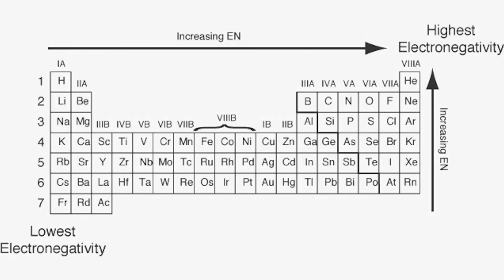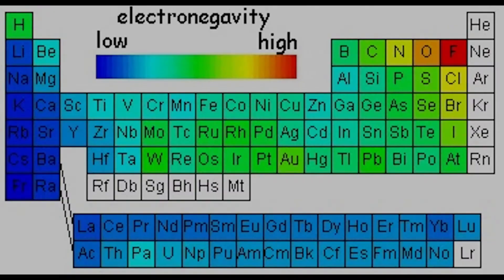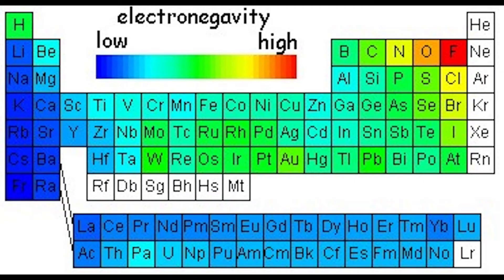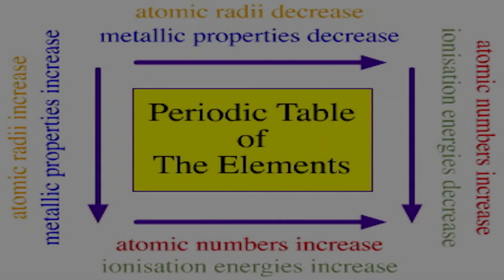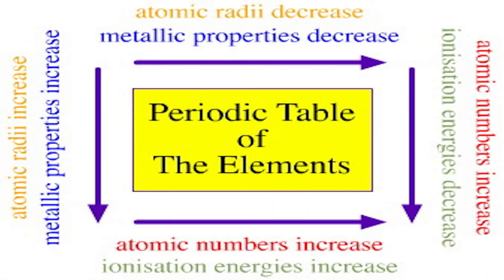And now for our last topic: electronegativity. This is the measure of an atom's attraction for electrons. Electronegativities tend to increase going across each period, with exceptions of course. The two groups at the very far left are the least electronegative elements. Nitrogen, oxygen, and halogens are the most electronegative elements. Electronegativities tend to decrease down a group or remain about the same. To sum it all up, periodic law is a bunch of trends that scientists have found to be present in the periodic table.